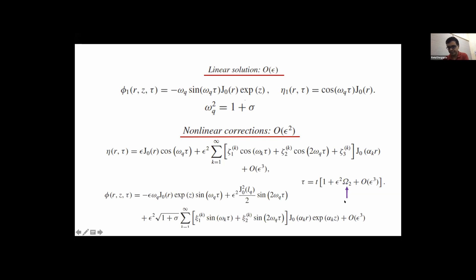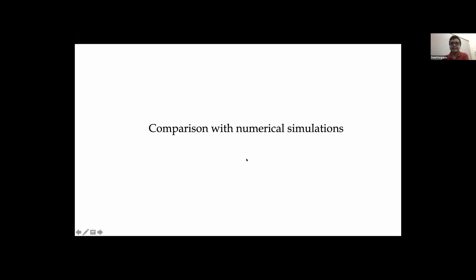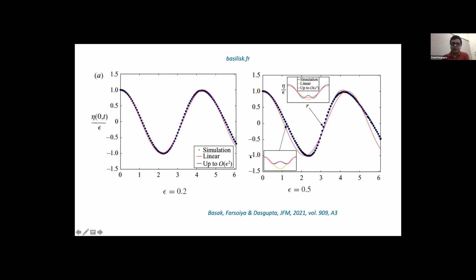Now I compare the predictions of η with our numerical simulations. I have tracked the interface at the axis of symmetry. There are three things shown: dots are simulations, the red line is the linear model, and the blue line is the nonlinear model up to order epsilon squared. For sufficiently small epsilon, nothing interesting happens — the interface just goes up and down harmonically in time with the frequency given by the dispersion relation, and all three curves lie on top of each other.